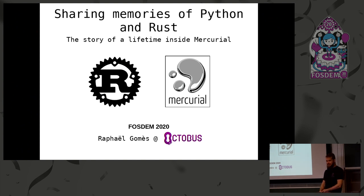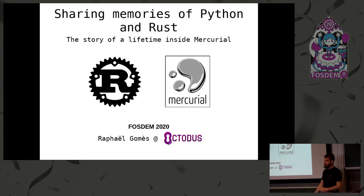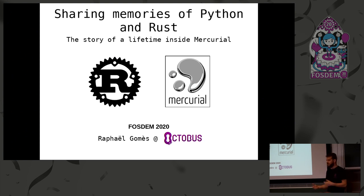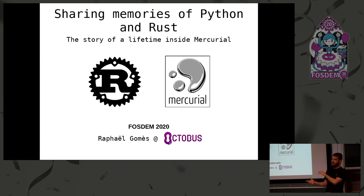Thank you all for coming. My name is Rafael Gomez. I work at Octobus, a small consulting company specialized in Mercurial. I'm going to talk about how we use Python and Rust together in this big, old code base, and what were the pain points and how we fixed some of them.